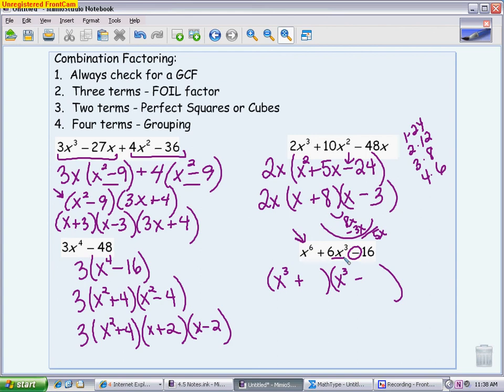Now I need to get 16, so 16 is either 1 times 16, 2 times 8, or 4 times 4. Looking at the combinations, the one that is going to work is going to be the 2 times 8. I need the 8 to be positive and I need the 2 to be negative. You can do a quick check. Inner term is 8x cubed, outer term is negative 2x cubed, giving you the middle term.